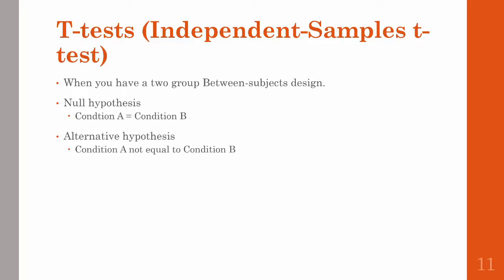The final kind of t-test is an independent samples t-test. This is similar to a paired samples t-test, but now using a between-subjects design — so people only participating in one condition or another. The null hypothesis and alternative hypothesis are set up the same way, it's just that the math is a little different when you actually go and run the test. So let's go ahead and do this in JASP now.